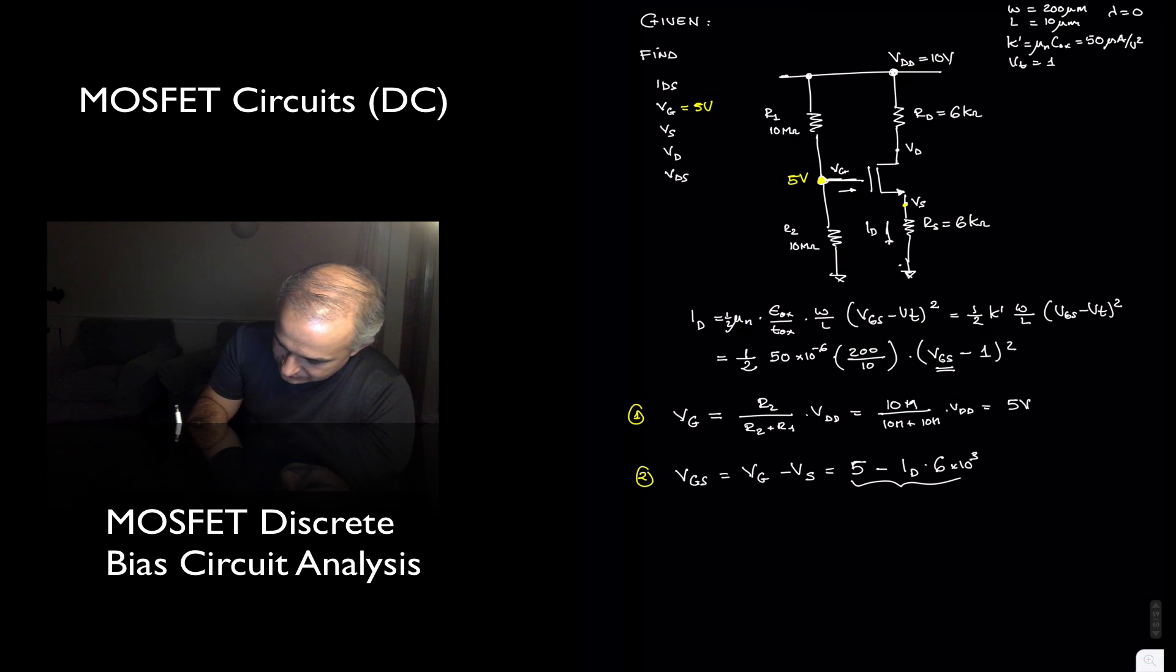Now, this expression, we can plug it in right here, and we have an equation with an Id and an Id, a quadratic equation, that we can solve. So effectively what I'm advocating is Id equals one-half, 50 times 10 to the minus 6, 200 over 10.